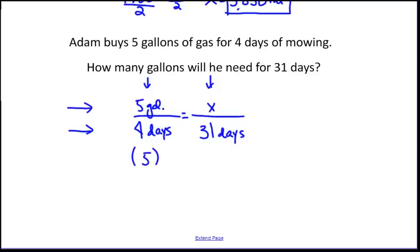We will have 5 times 31 equals 4 times x. That is 155, which equals 4x.